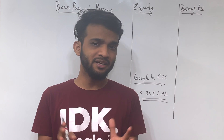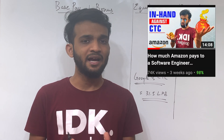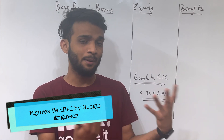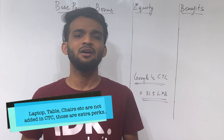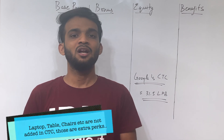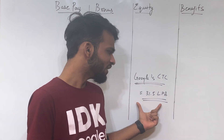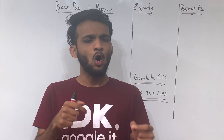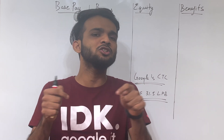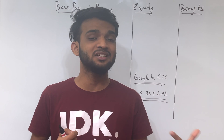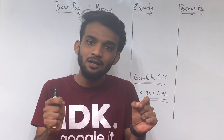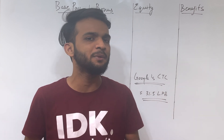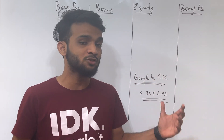In the previous video, we decoded the salary structure of Amazon and you saw that even after having a 30 CTC, why an Amazon engineer was getting around 1 lakh into his bank account per month. Now over here, Google's CTC is 31.5 LPA. He gets almost a similar amount into his bank account as an Amazon engineer does, but still the Google CTC is not just 1.5 LPA more — it's way more than that, and that is what I'm going to discuss.